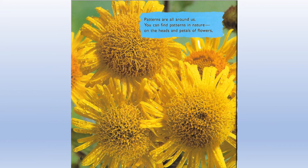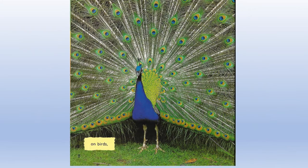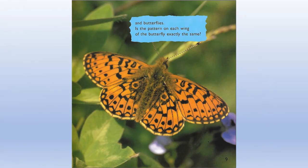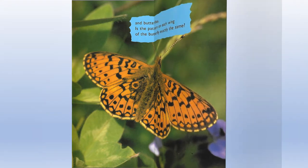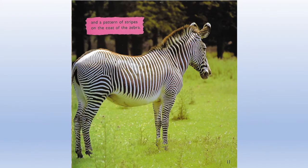Patterns are all around us. You can find patterns in nature, on the heads and petals of flowers, on leaves, on birds, and butterflies. Is the pattern on each wing of the butterfly exactly the same? There is a spiral pattern on this shell. And a pattern of stripes on the coat of the zebra.